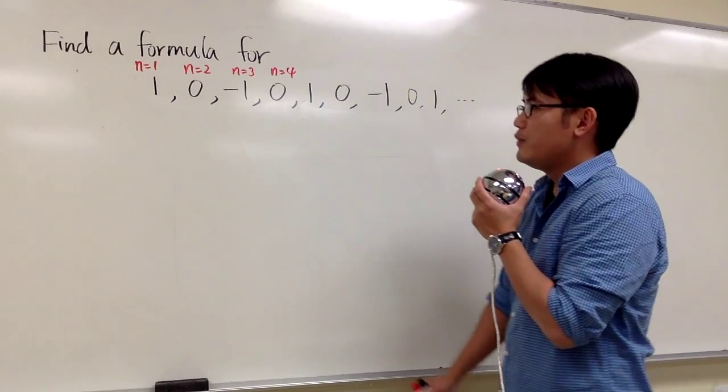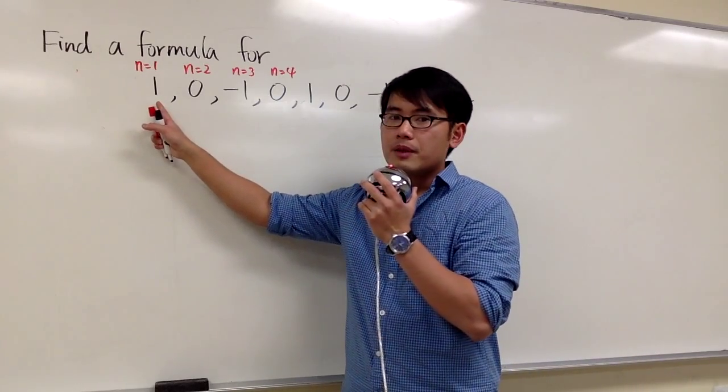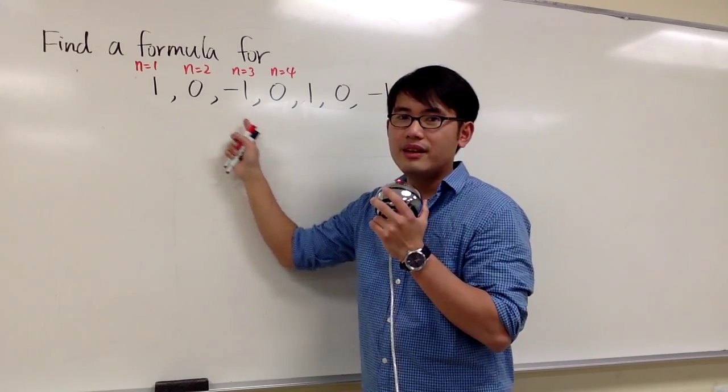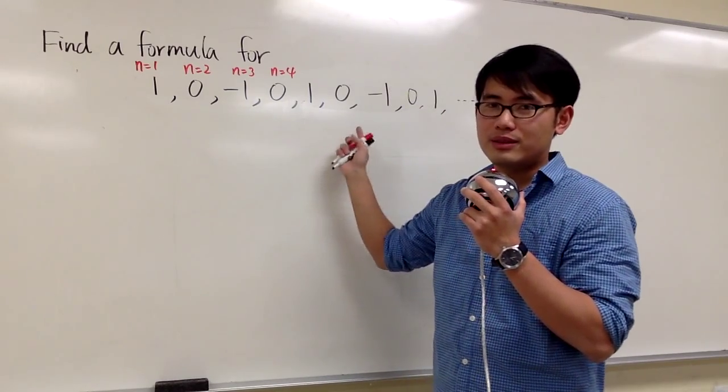So what kind of function can we use to describe this pattern? There are two ways to look at this. If you want to just think about it, you start with something with 1, right? And then you go to 0, and then you have negative 1, and then 0, and then 1, and 0, and so on.